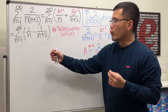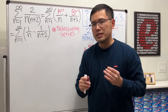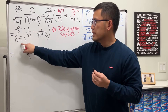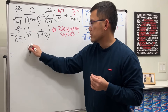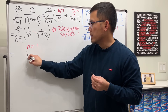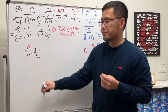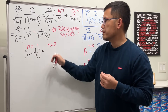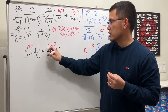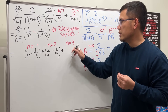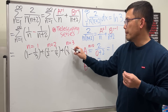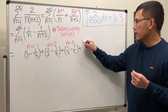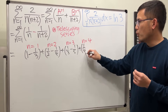We write down several terms to see what cancels. When n=1: 1 minus 1/3. When n=2: plus 1/2 minus 1/4. When n=3: plus 1/3 minus 1/5. When n=4: plus 1/4 minus 1/6. And so on. Writing down the general nth term: 1/n minus 1/(n+2), and also the (n-1)th term: 1/(n-1) minus 1/(n+1). This is the nth partial sum.